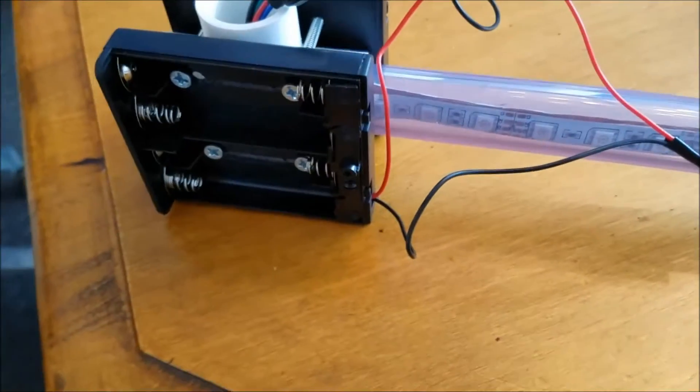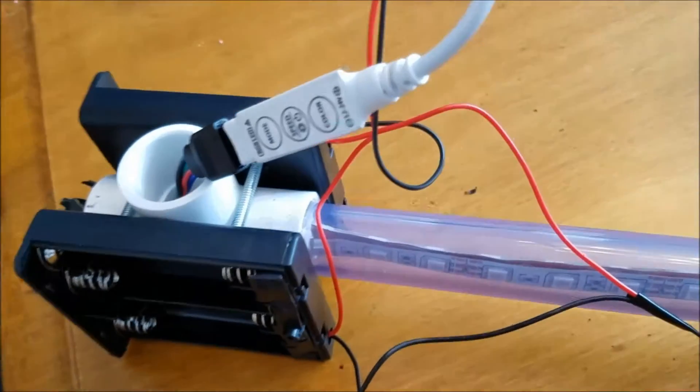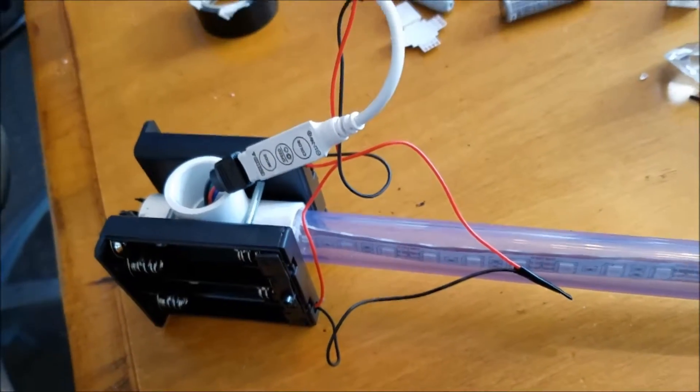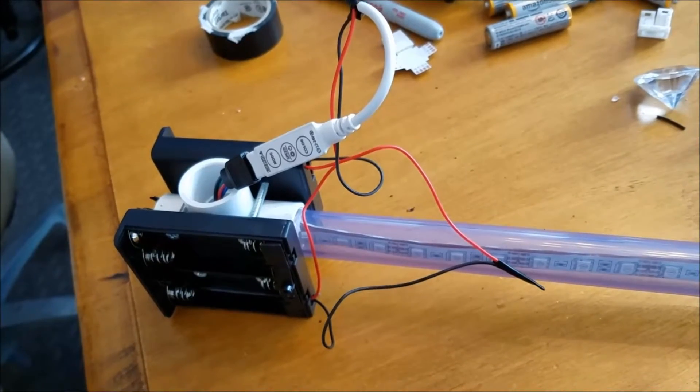You get one and a half volts per double A, so eight of them gives you the 12 you need. So we'll pop some batteries on and handle and we'll see if she works.